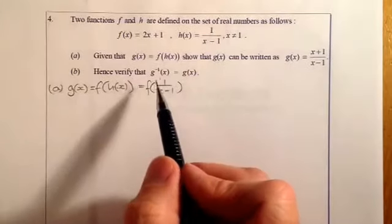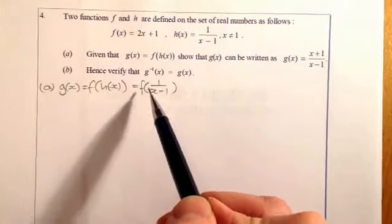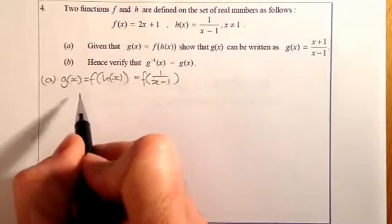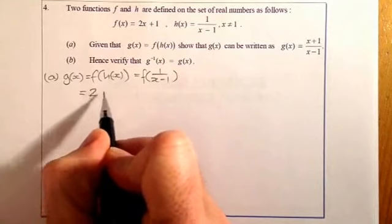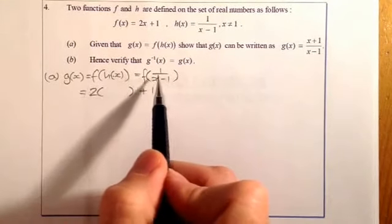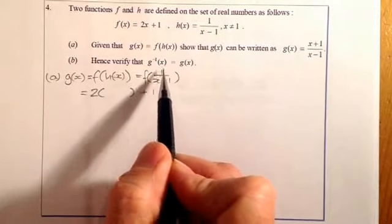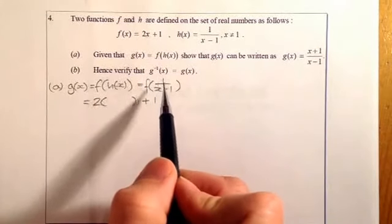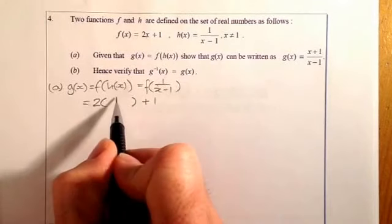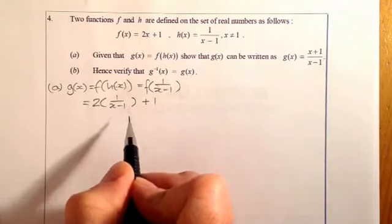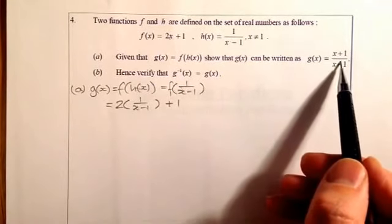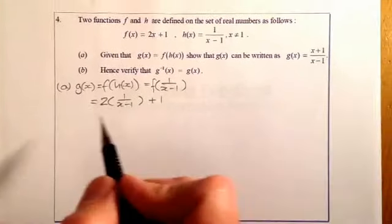Now I'm going to look at the f function. The f of x function gives me 2x plus 1. So what I've got is 2 times x plus 1, but instead of the x, what I'm putting in here is 1 all over x minus 1. And what I'm going to try and do now is to turn that into a single fraction.